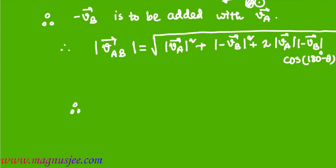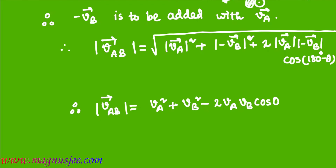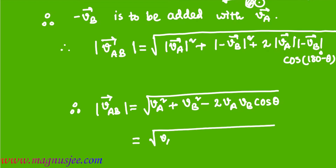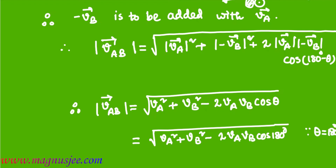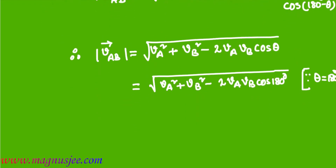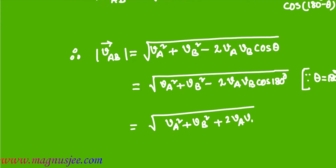Therefore, mod vAB equals the square root of vA squared plus vB squared minus 2 vA vB cos theta. Now theta is 180 degrees, so we write: square root of vA squared plus vB squared minus 2 vA vB cos 180°. Where cos 180° equals minus 1, hence this becomes the square root of (vA + vB) whole squared, which equals vA squared plus vB squared plus 2 vA vB.